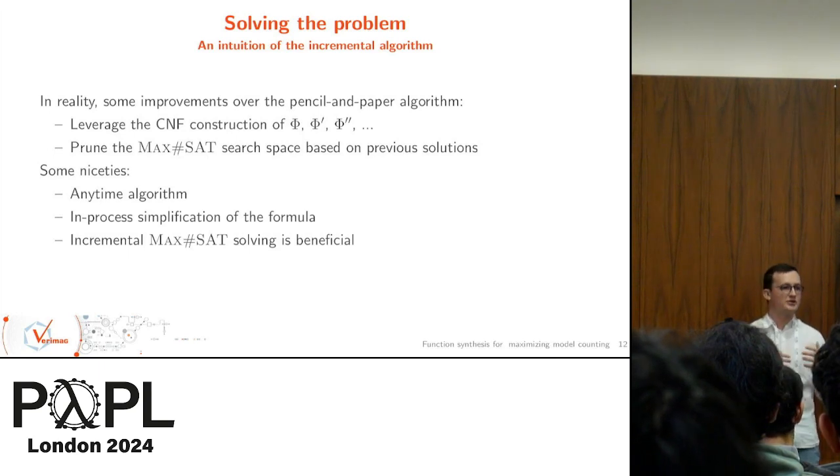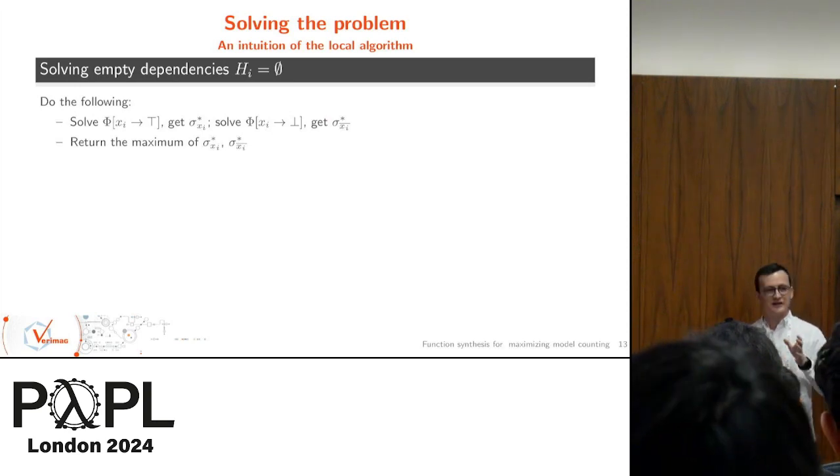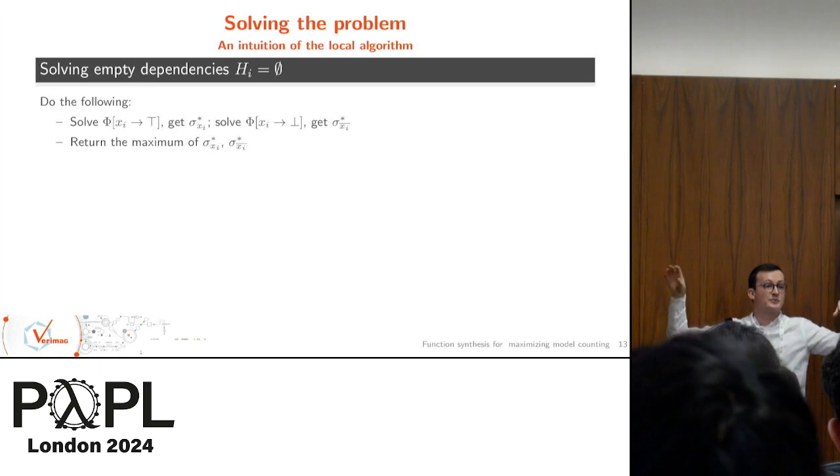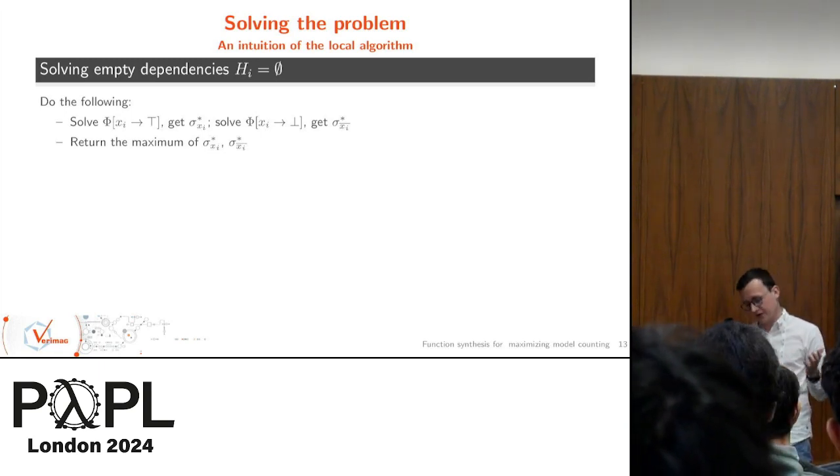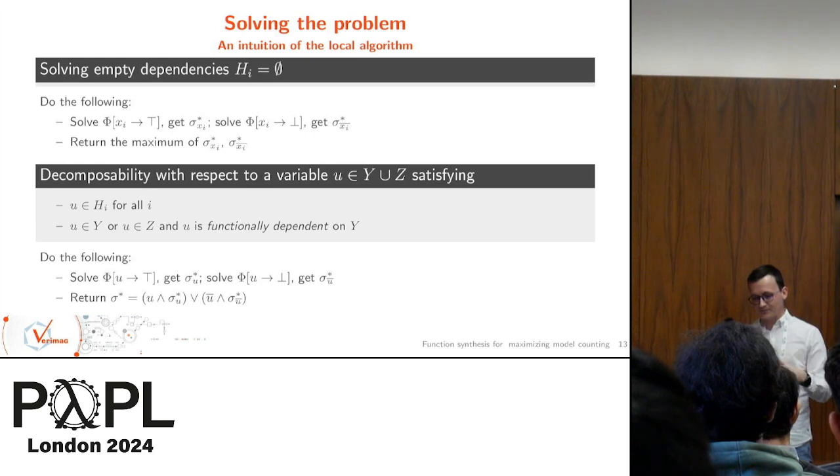The next part of the talk is about another algorithm that we have, which is more of a bunch of simplification procedures that we call the local algorithm. Basically, it handles two specific cases that we want to do. The first one is when we have to solve empty dependency sets. What we're going to do is pick the corresponding maximizing variables, set it to true, set it to false, solve the two sub-problems, and return the best answer in the two cases. This is not groundbreaking, but it helps, and it allows to split the problem in two smaller parts.